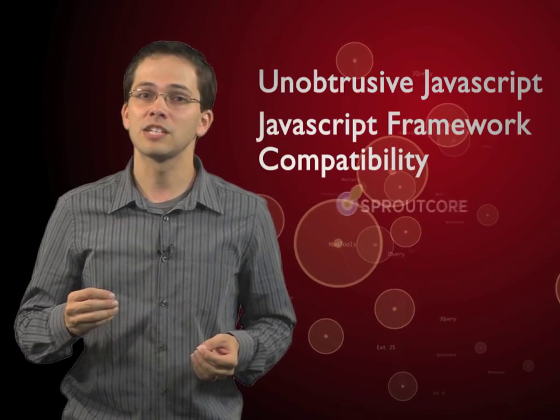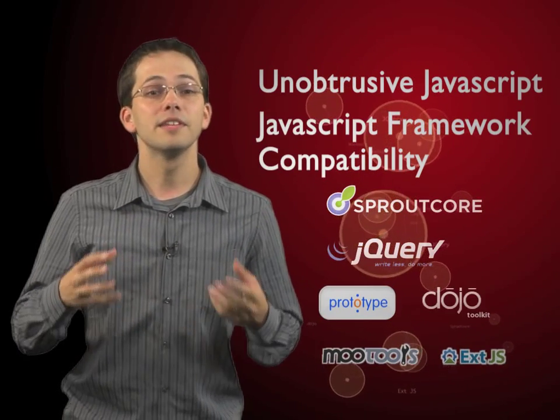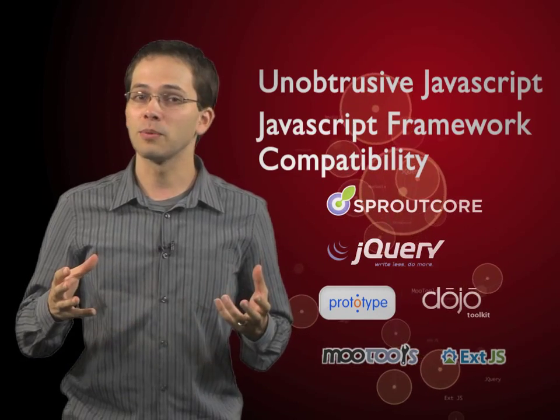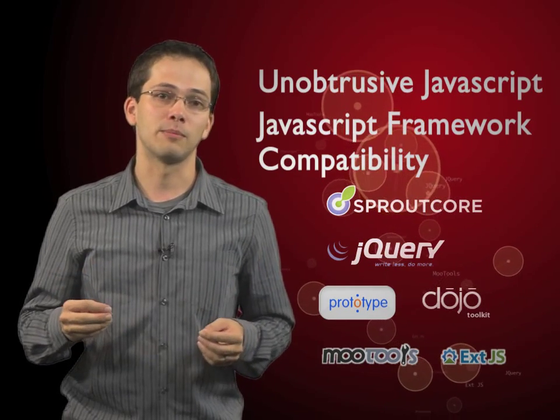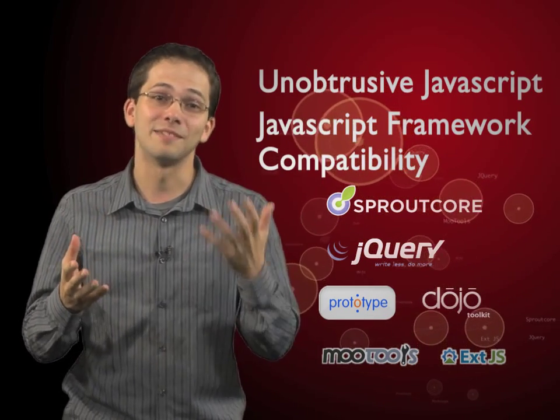By adopting HTML5 standards, Rails 3 encourages developers to write unobtrusive JavaScript and gives them the ability to work seamlessly with any JavaScript framework library. This means they can take advantage of thousands of open-source JavaScript libraries, saving their clients time and money.